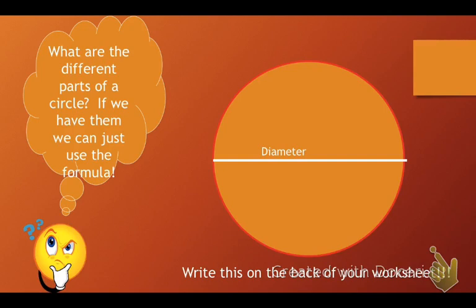The entire length of the circle is called the diameter. Half the length of a circle is the radius. And if you remember that word, that's because that's what we need for our formula, for our area formula.